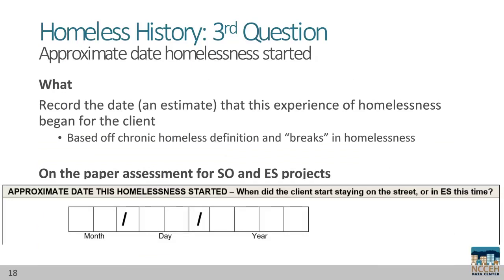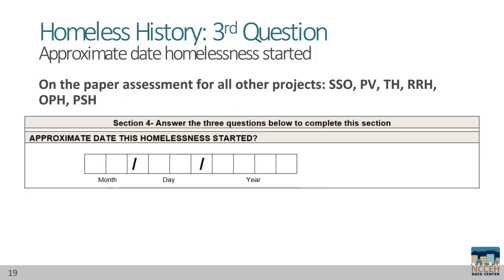The third homeless history question is approximate date this homelessness started. This date records when a client's experience of homelessness began and uses the same homeless history definition as above. This really is approximate — use holidays, seasons, and other significant dates to help a client select a specific date their current experience of homelessness began. On the paper assessment for all other project types, the question is located in section 4 of the homeless history.